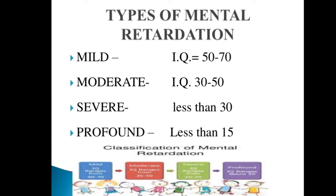There are four types of mental retardation. Mild: IQ is 50 to 70. Moderate: IQ is 35 to 50. Severe: IQ is less than 35. Profound: IQ is less than 20.